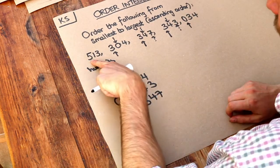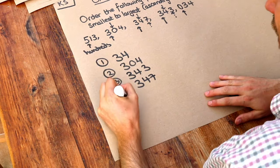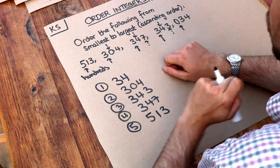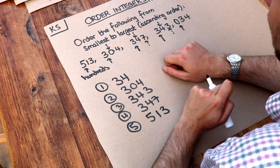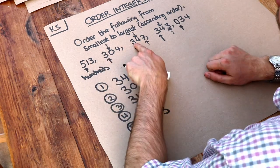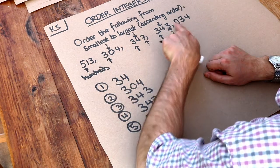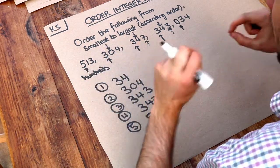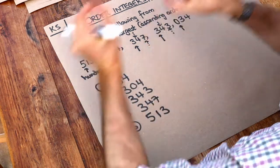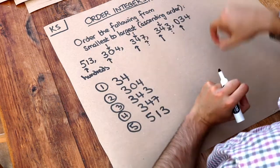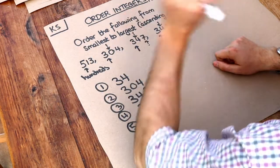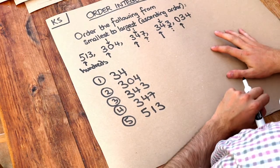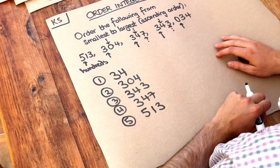So our ordered list is: 34, then 343, then 347, and finally the number with the highest hundreds digit is the biggest. To repeat the strategy: we always compare the place value with the highest worth first — the hundreds digit — and when it's a draw we compare the next place value: tens, then units, and so on.